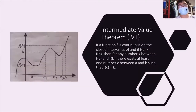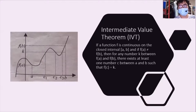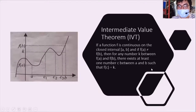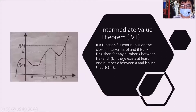Now we're going to discuss the Intermediate Value Theorem — one of the applications of continuity. If a function is continuous on the closed interval [a, b], and f(a) ≠ f(b), then for any number k between f(a) and f(b), there exists at least one number c between a and b such that f(c) = k. The values c₁, c₂, c₃ must fall between a and b.